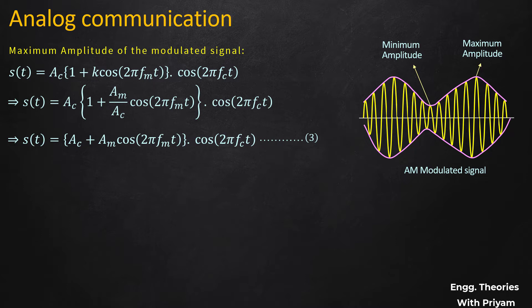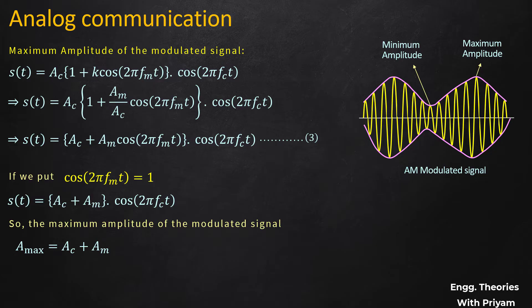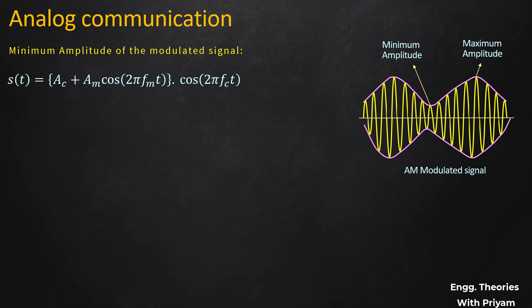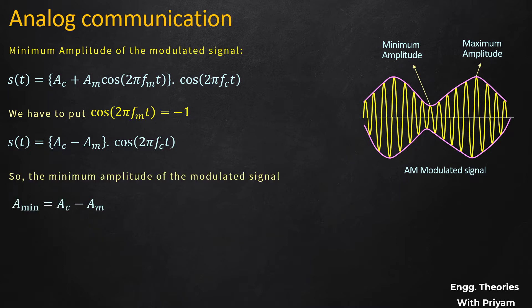In Equation 3, when cos(2π·fm·t) = 1, s(t) = (Ac + Am)·cos(2π·fc·t), so the maximum amplitude A_max = Ac + Am (Equation 4). When cos(2π·fm·t) = −1, s(t) = (Ac − Am)·cos(2π·fc·t), so the minimum amplitude A_min = Ac − Am (Equation 5).